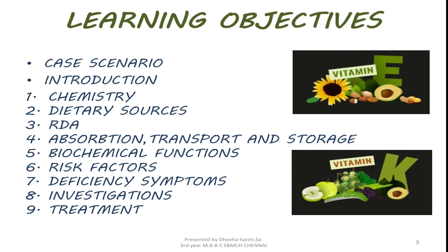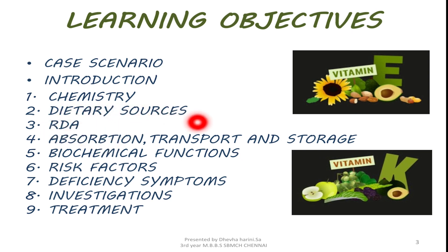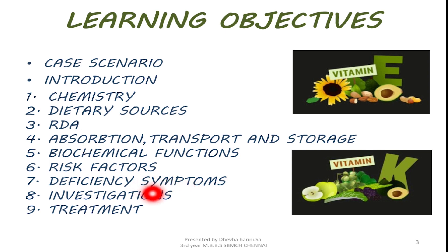So we will go in an order which will be easy for you to understand. Firstly, we will have a case scenario, then a small intro about vitamin E and vitamin K. Then we will start off with its chemistry, that is the chemical formula of these vitamins, then its dietary sources, the recommended daily allowance, how it is absorbed, transported, where it is stored, what are their biochemical functions, risk factors, deficiency symptoms, investigations, and how to proceed with treatment.